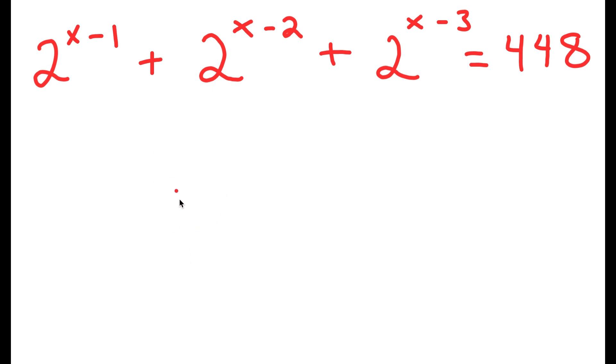In this problem, I have 2 to the power of x minus 1, plus 2 to the power of x minus 2, plus 2 to the power of x minus 3, is equal to 448.